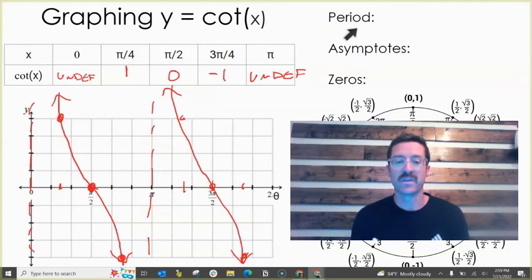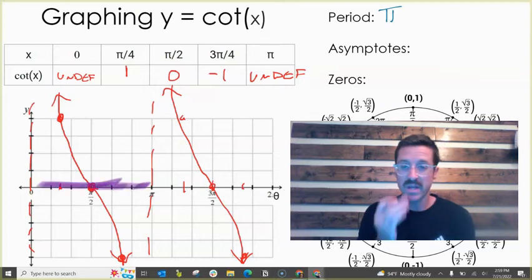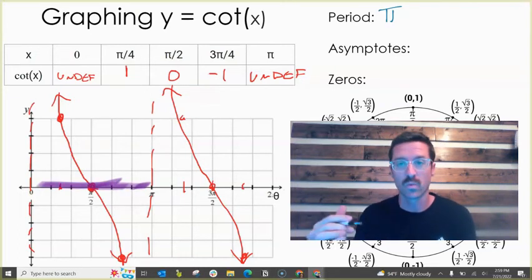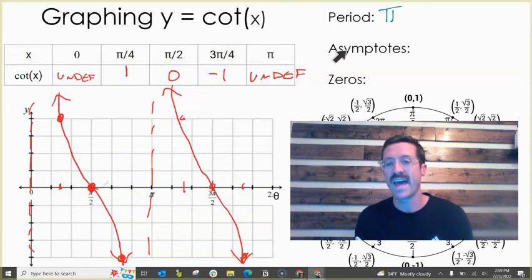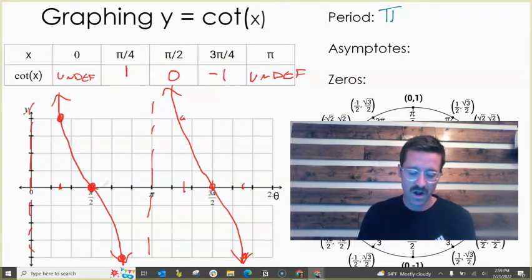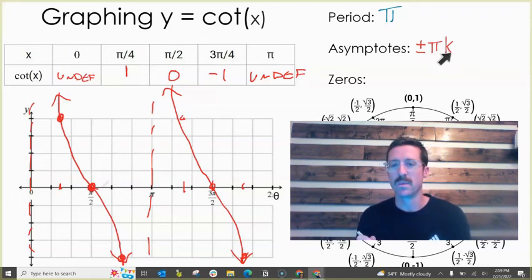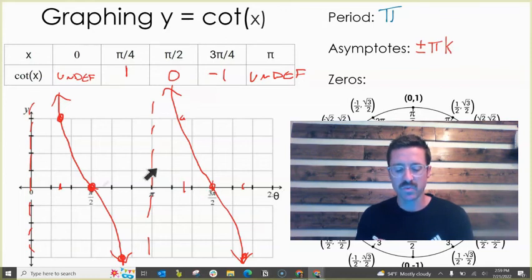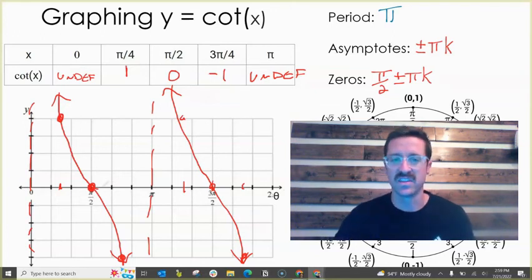I'll answer a couple quick questions about this. Our period is the same for tangent and cotangent—still π units, the distance from asymptote to asymptote. The thing you'll notice is our asymptotes and zeros flipped. What was an asymptote for tangent is a zero for cotangent. Our asymptotes are at zero, π, 2π, so at plus or minus πk units. Our zeros take place where tangent's asymptotes took place. If this first zero is at π over 2, we can go left or right π units to get the next zero.